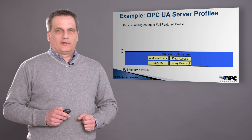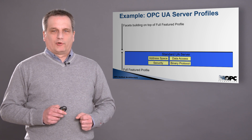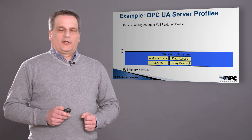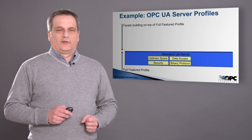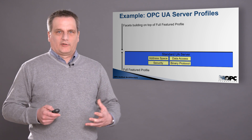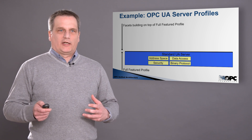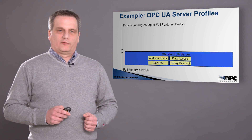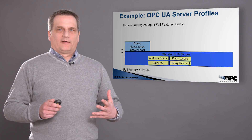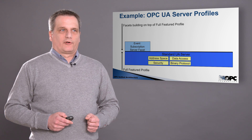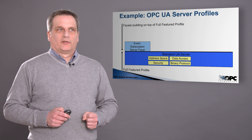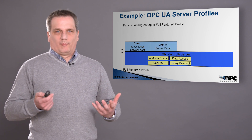As an example, in this picture we have a full featured profile which is a standard UA server. This already contains the address space, it contains security, and it contains data access — so the access to this information: reading, writing, subscribing to data. It also contains the protocol binding, which in this case is the binary TCP protocol. On top of this full featured profile we can have an event subscription facet and a method facet to call methods.